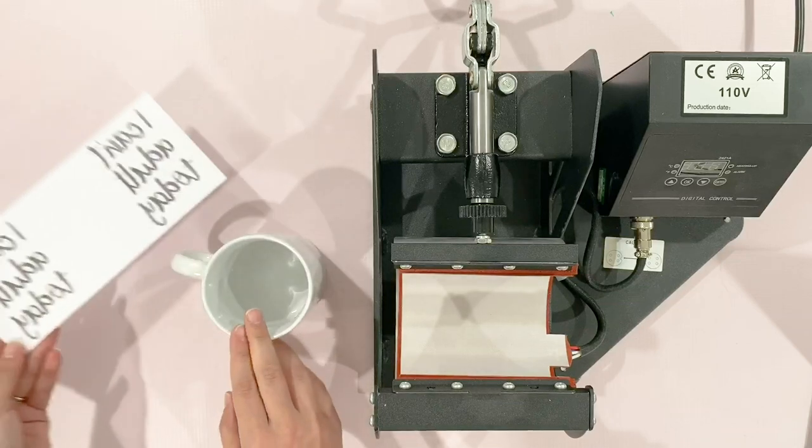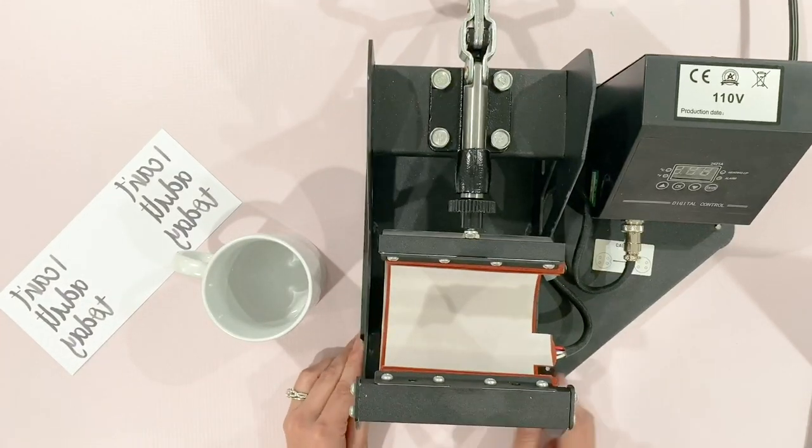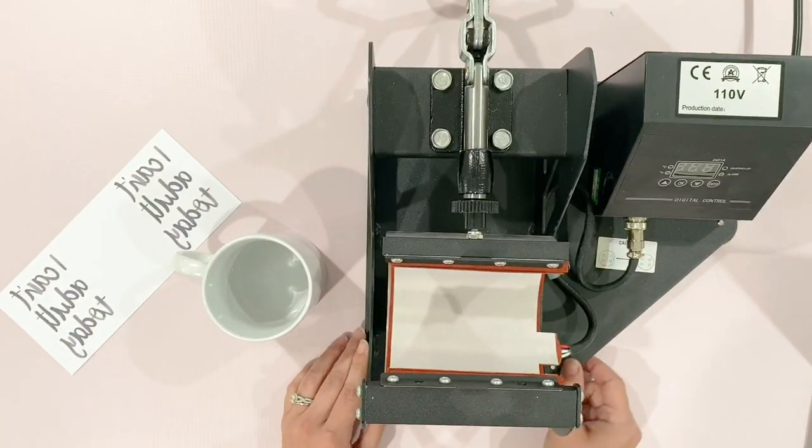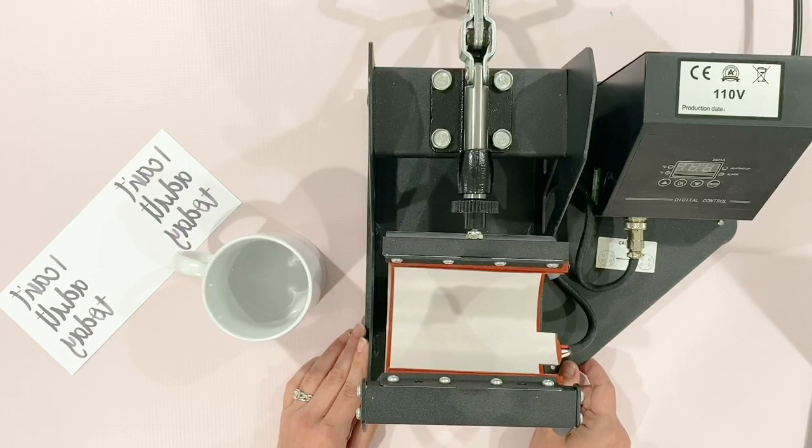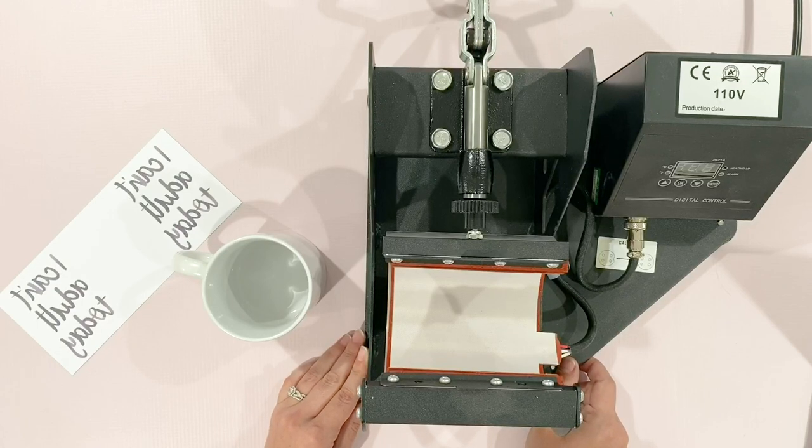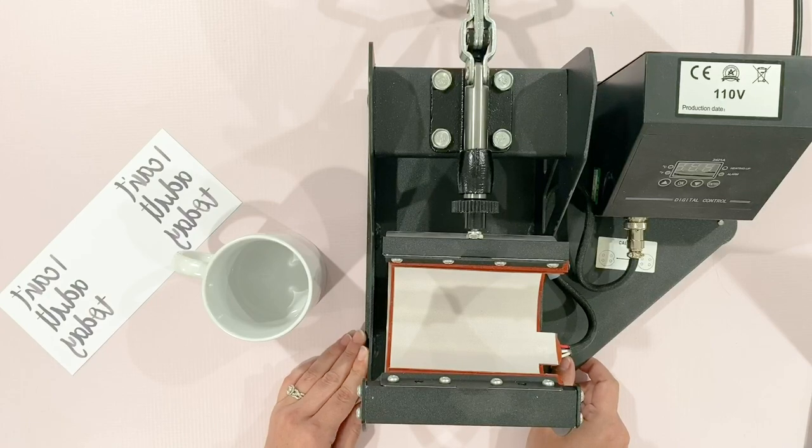And then you'll need a mug press. I'm using this mug press that I bought on Amazon. I will link everything so you have it. Some other things that are optional are heat transfer mask and heat resistant tape, which I will show you later in the video. All right, let's get our image ready.